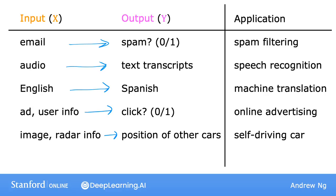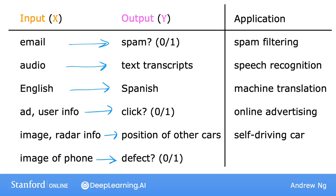Or take manufacturing — I've actually done a lot of work in this sector at Landing AI. You can have a learning algorithm take as input a picture of a manufactured product, say a cell phone that just rolled off the production line, and have the learning algorithm output whether or not there is a scratch, dent, or other defect in the product. This is called visual inspection and is helping manufacturers reduce or prevent defects in their products.